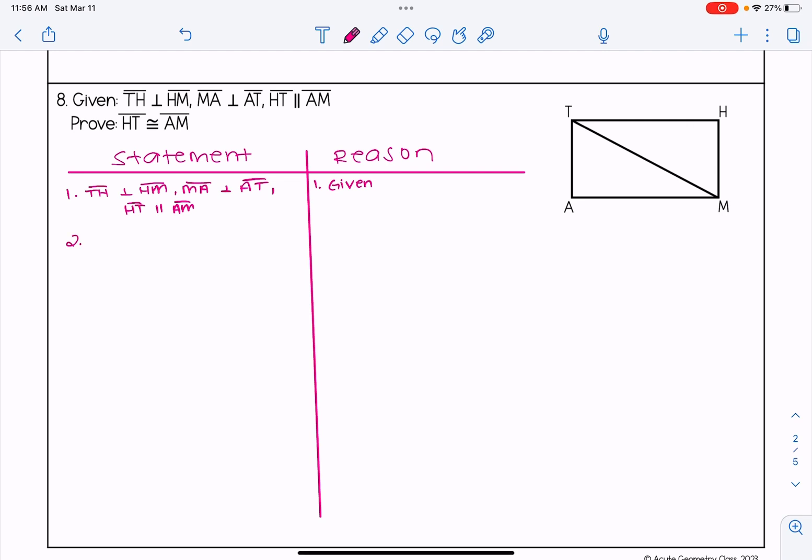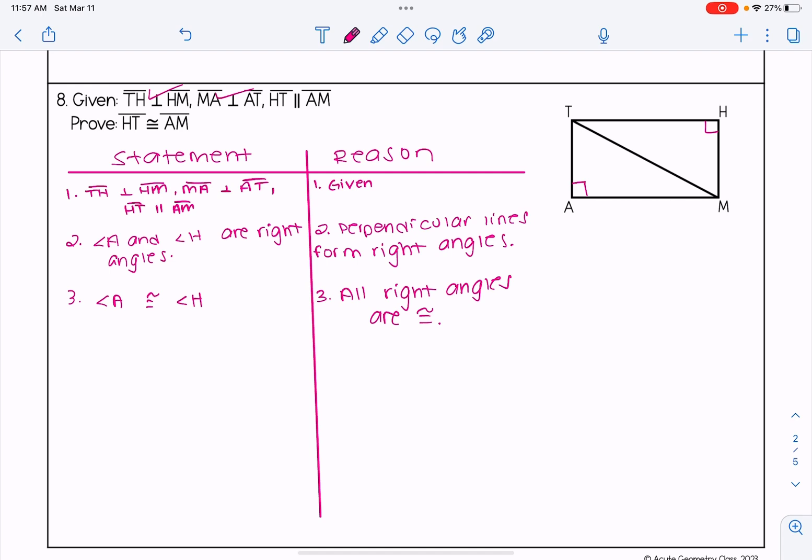So first, based upon the perpendicular symbol, I know I have right angles. And again, I've already gone in and written the givens in my proof. So I know that angle A and angle H are right angles. And my reason is that perpendicular lines form right angles. Anytime we say that they are right angles, we want to also add in that they are congruent. So angle A is congruent to angle H because all right angles are congruent. And I will mark those in my diagram.